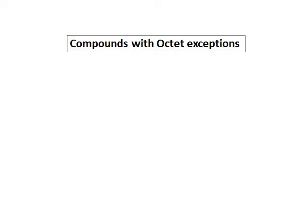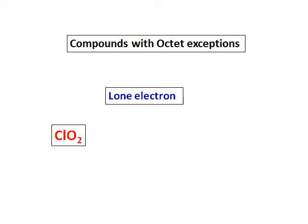One more exception for octet completion is having a lone electron. Some compounds have an odd number of electrons, and therefore the central atom will have a single electron around it.